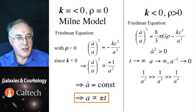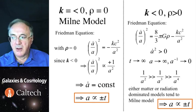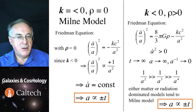And since the obvious inequality applies here, we see that in the asymptotic case, either matter or radiation dominated universe will in the end behave just like the Milne model.